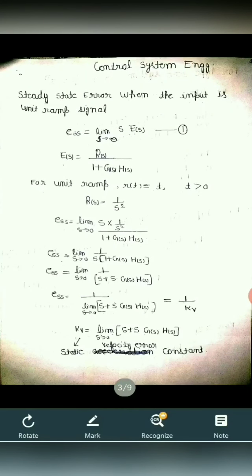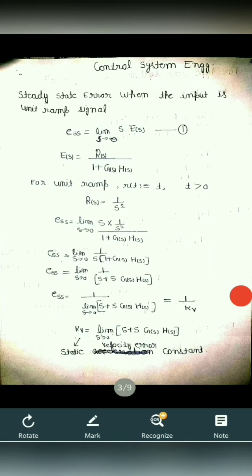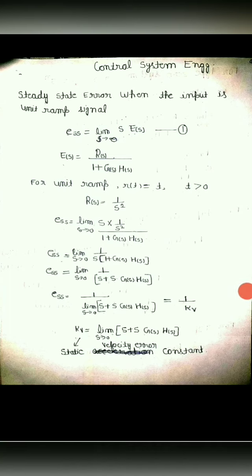In the previous video, we calculated steady state error when the input is a unit step signal. Now, in this video, we calculate the same for unit ramp signal and parabolic signal.